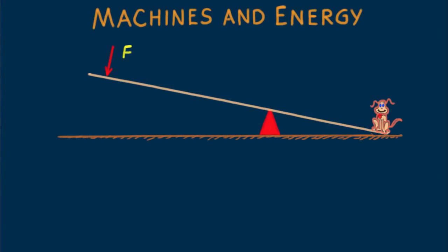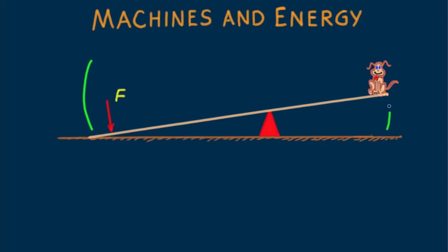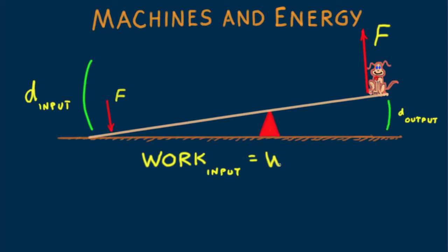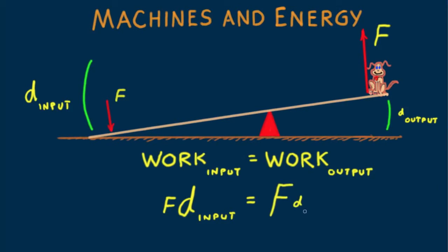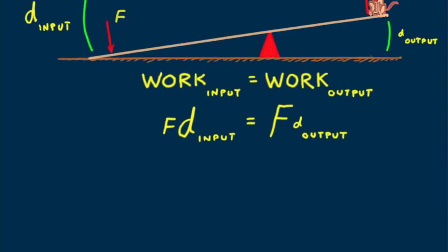Operation of a lever follows the conservation of energy. At the same time we do work on one end by pushing down on it, the other end does the same amount of work in lifting the load. In accord with the conservation of energy and assuming no friction, work input equals work output — or force times distance input equals force times distance output. Where the input side of the lever is longer than the shorter output side, a lever is able to multiply input forces.